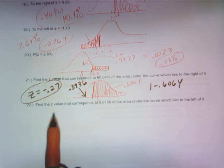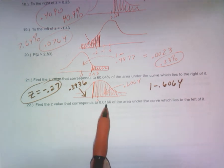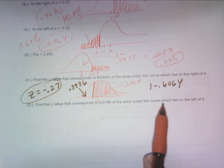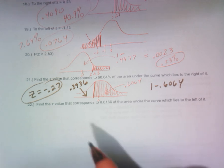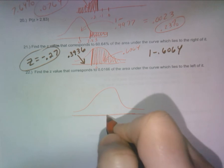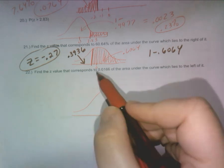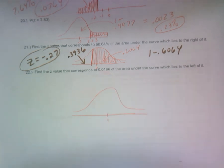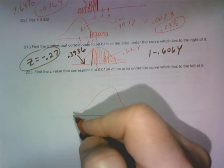All right, let's do one more like that and we are done. Find the z value that corresponds to 0.0166 of the area under the curve which lies to the left. Yes, that's perfect. We love it when it says to the left, to the left, Beyonce.